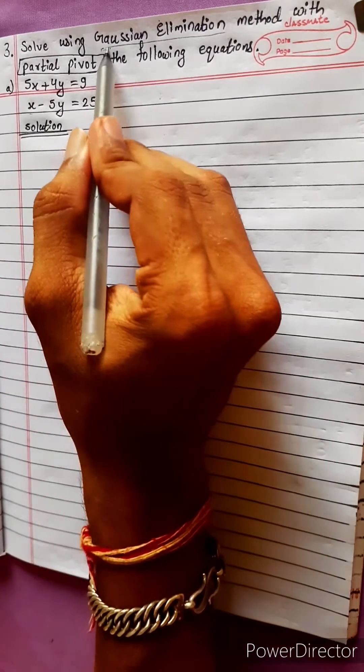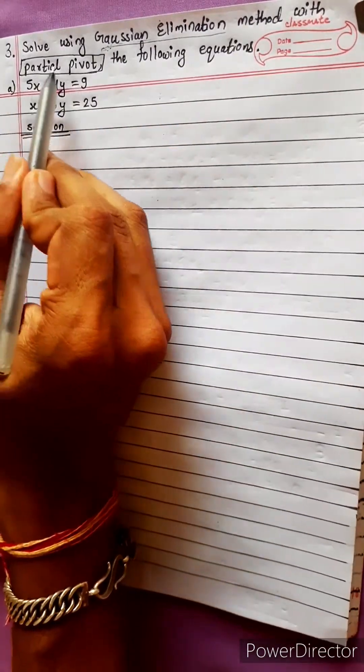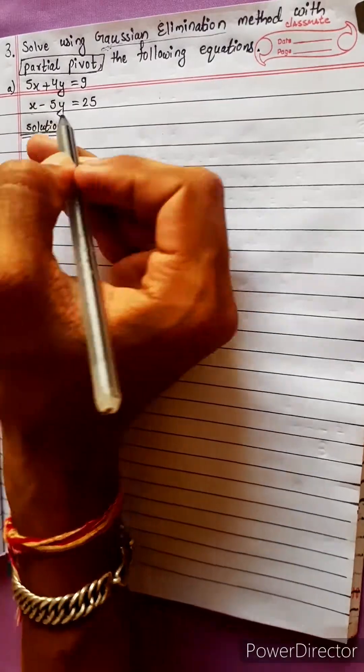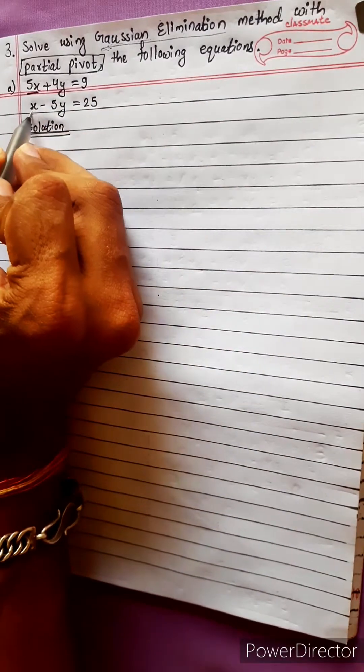Solve the following equations using Gaussian elimination method with partial pivot. In partial pivot, we arrange in descending order, with the highest coefficient first and the lowest last.